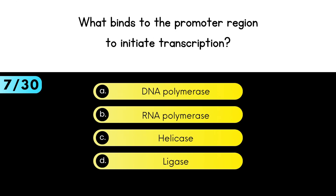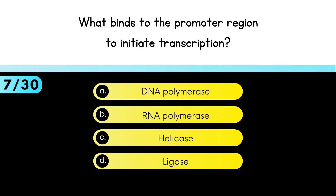What binds to the promoter region to initiate transcription? RNA polymerase binds to the promoter region.